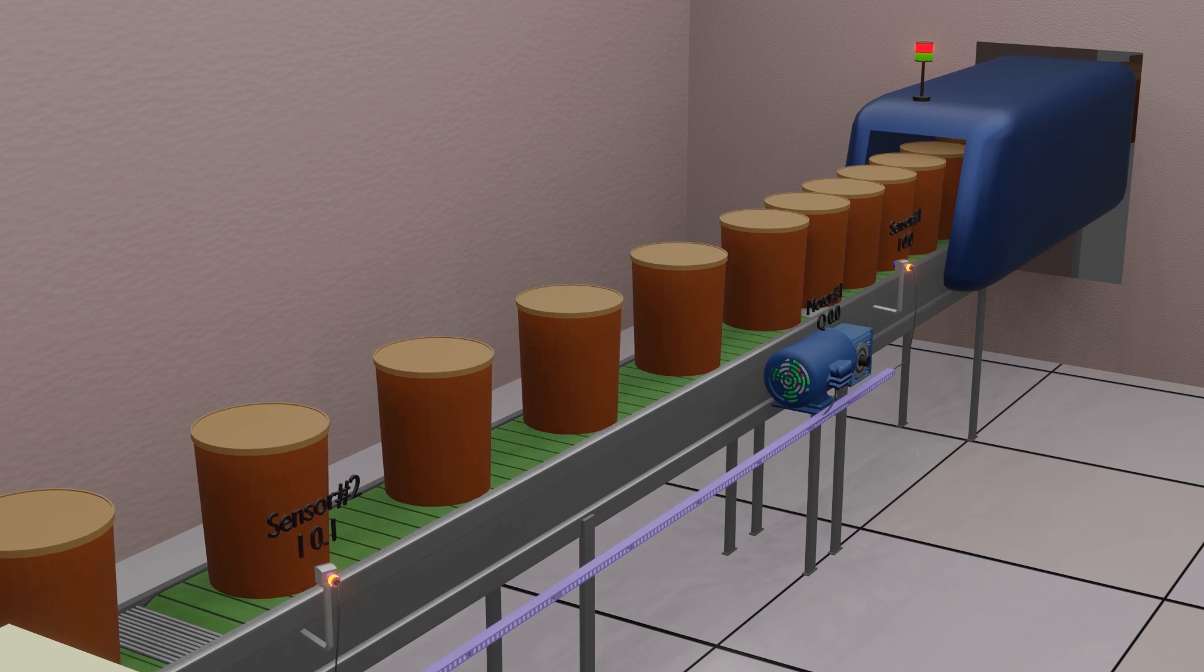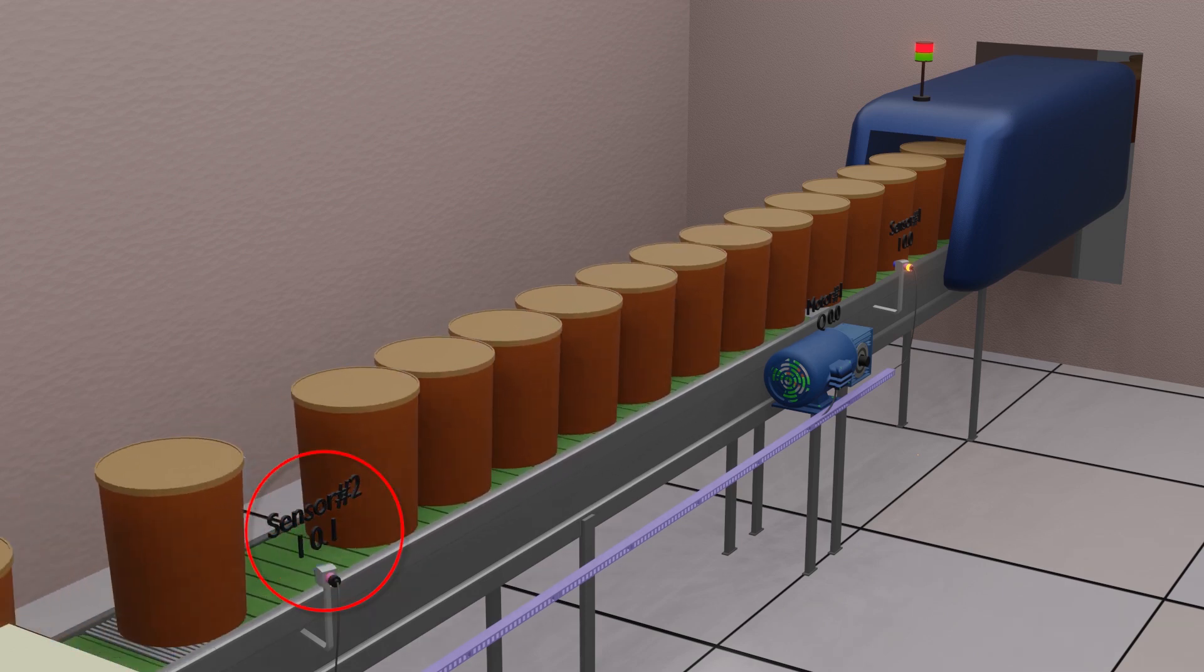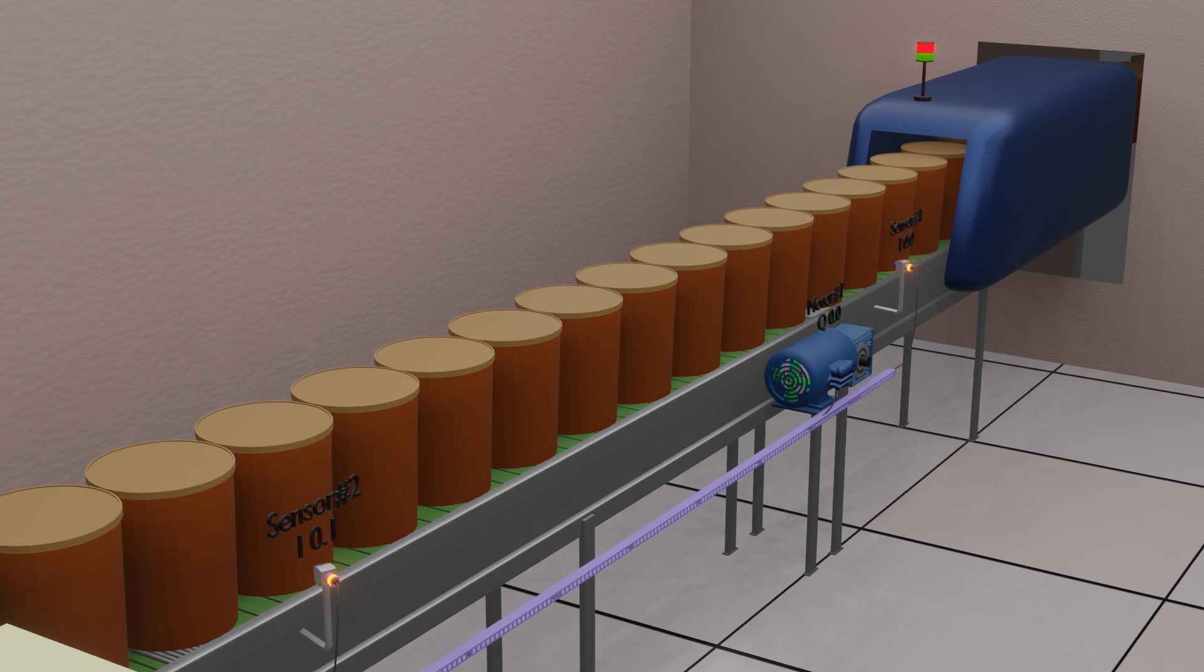Next, we have installed sensor 2 at the start of the backup conveyor, connected at PLC input I 0.1.